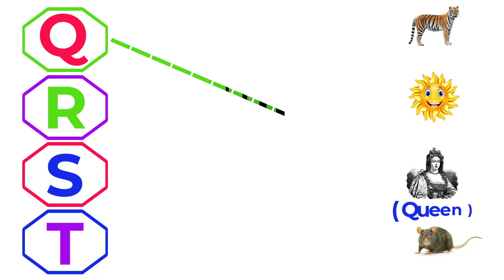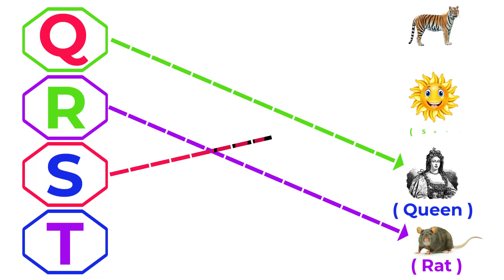Q for queen, R for red, S for sun, T for tiger.